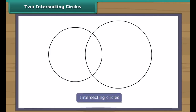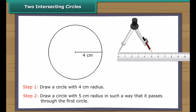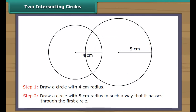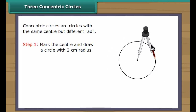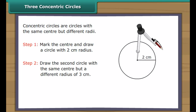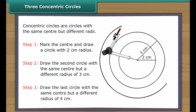Two intersecting circles. Intersecting circles may or may not have the same radii. Draw a circle with four centimetres radius, then draw a circle with five centimetres radius in such a way that it passes through the first circle. We have two intersecting circles. Concentric circles are circles with the same centre but different radii. Let us draw three concentric circles with radii two, three and four centimetres. Mark the centre and draw circles with each radius using the same centre. We have three concentric circles.